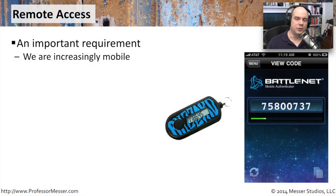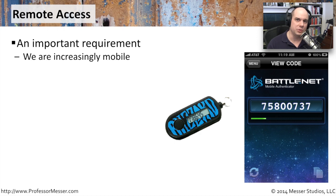We've created all of these security infrastructure devices — firewalls, network address translations, and network access controls — because we're always concerned about who's connecting to our network. Now, of course, our users are much more mobile. They're in coffee shops, home offices, traveling around the world, but they still need access to important resources on the inside of the network. That is one of the primary balancing acts you have as a security professional: how do you provide the important business access to these devices but still keep everybody secure?